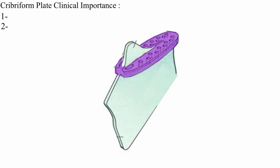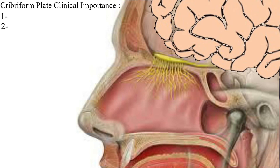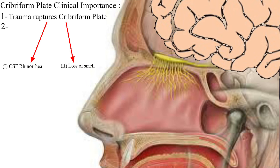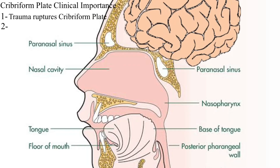There are also two clinically important points regarding the cribriform plate. In head injury, if the cribriform plate gets ruptured, the patient will experience two things: one is CSF rhinorrhea, where CSF leaks from the anterior cranial fossa into the nasal cavity, and the second is loss of smell sensation due to damage to the olfactory nerve. The second clinical importance is that amoeba such as Naegleria passes through the cribriform plate and then infects the brain.